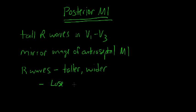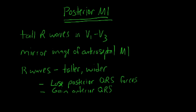With posterior MIs, you lose posterior QRS forces, and that results in unopposed anterior QRS forces moving towards V1 and V2. Depolarization towards any lead will show up as a positive deflection. Here it manifests as a tall R wave, but essentially this is the same mechanism that causes Q waves. Everything is a mirror image over the x-axis, and that should explain why the R wave is wide, just like a Q wave.